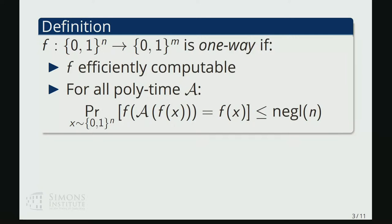So for any polynomial time adversary, given f of x for random input x, it should be hard for the adversary to find a pre-image of that function with better than negligible probability.